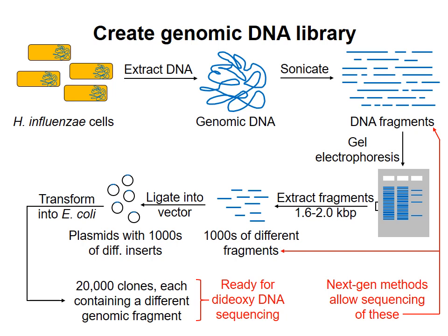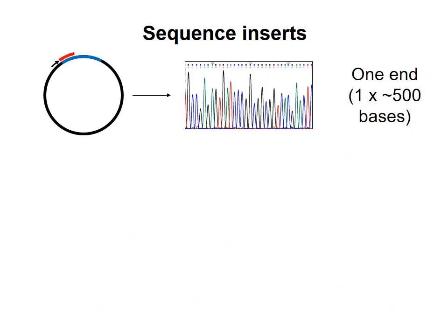In this video, I'll explain how they generated contigs representing larger sections of the genome. First, they obtained sequence information from each of the inserts in the library. The sequence of the vector, shown in black here, is known, so they could design sequencing primers complementary to the known sequence and use those primers to obtain sequence information from the inserts, shown in blue.